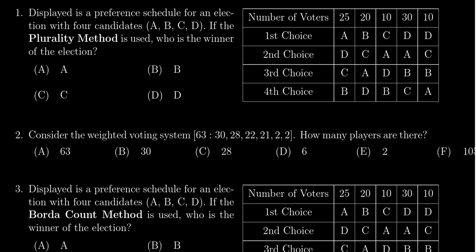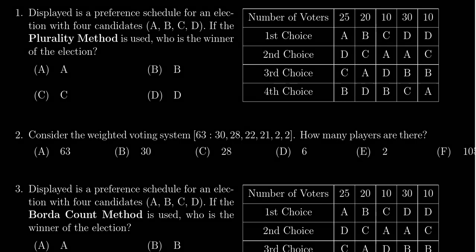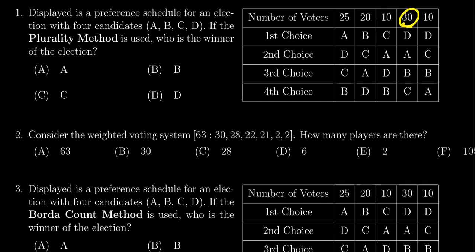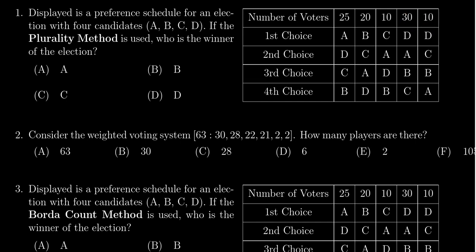The plurality method requires determining who has the most first place votes. A has 25 votes, B has 20, C has 10. D has two different profiles that vote for D first - one with 30 votes and another with 10 votes. Adding those together, D has 40 first place votes, and no one else compares to that.